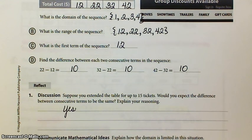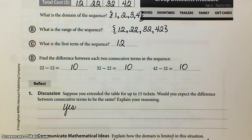Okay, so suppose you extended the table for up to 15 tickets. Would you expect the difference between the consecutive terms to be the same? Yes, because you're just buying tickets and then there's a flat $2 cost on top of it. The difference is going to be 10 each time.